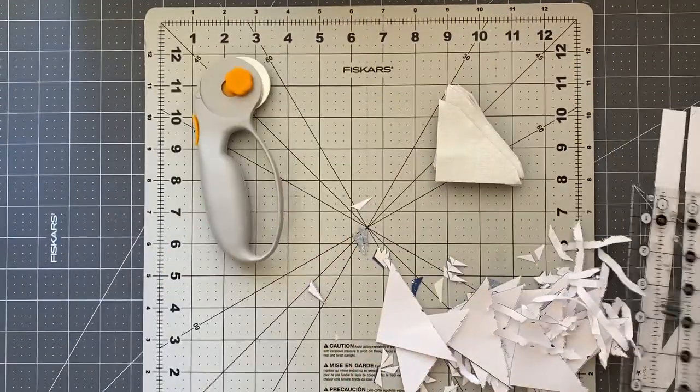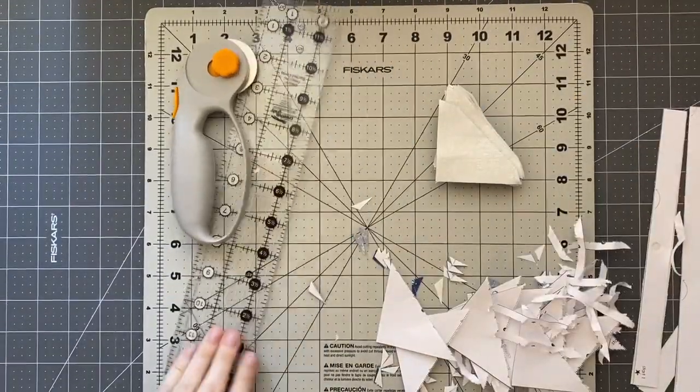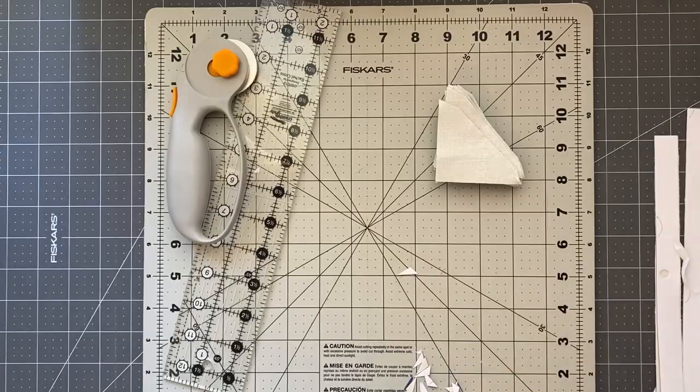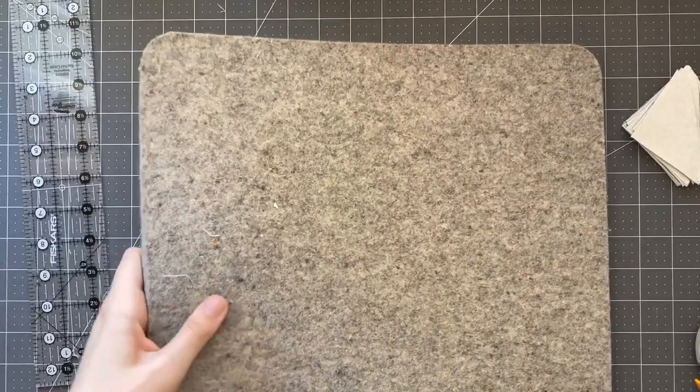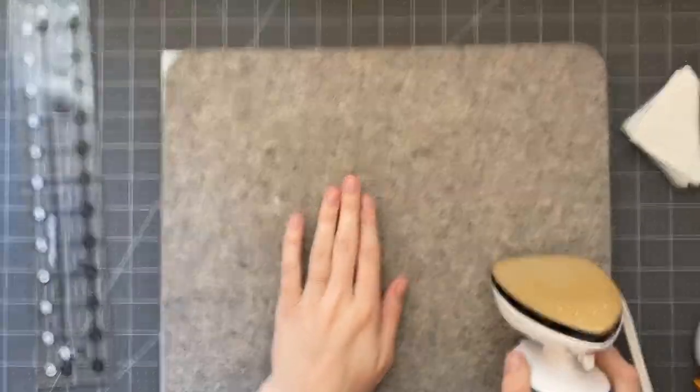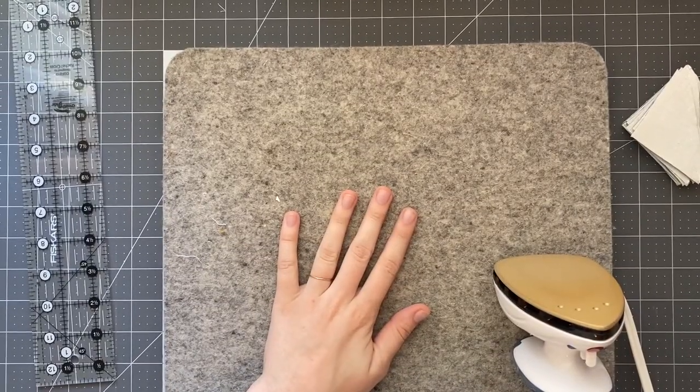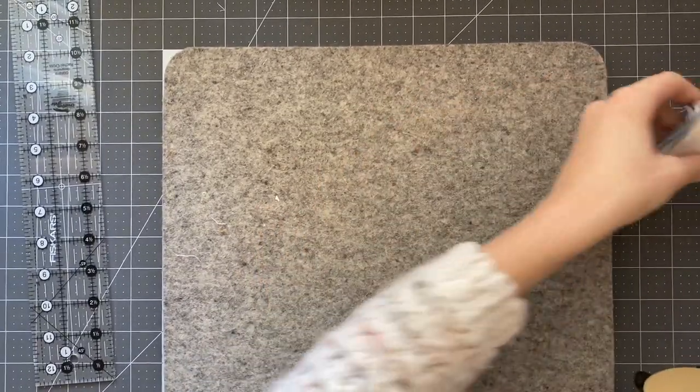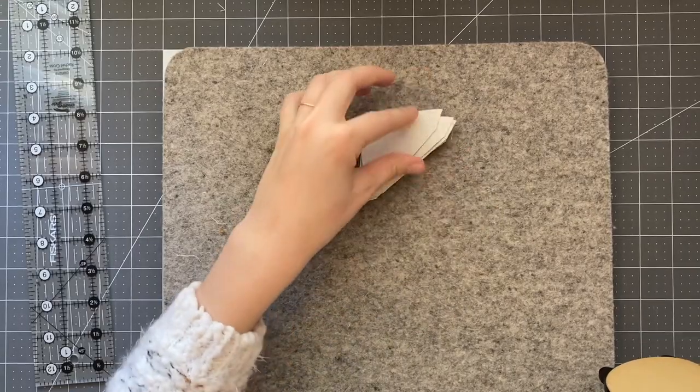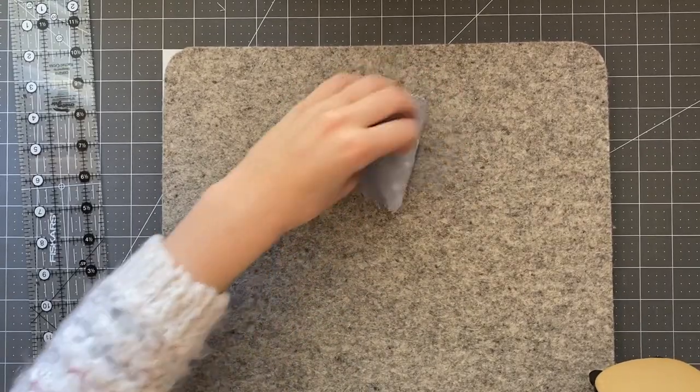Okay once I've done all of this ripping I'm going to scoop all this into the trash I like to use a wool mat and a mini iron to hop on my machine at all times and it's the perfect size for ironing small half square triangles just like this.